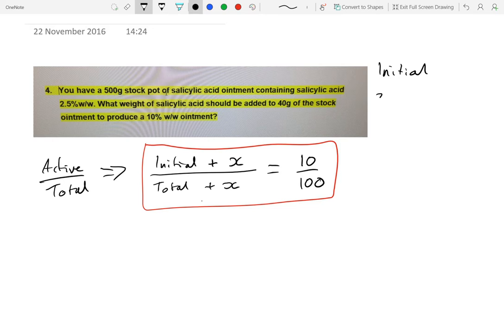And this formula is for weight/weight when it's weight on top and weight on the bottom of the fractions. So 2.5 grams in 100 grams.